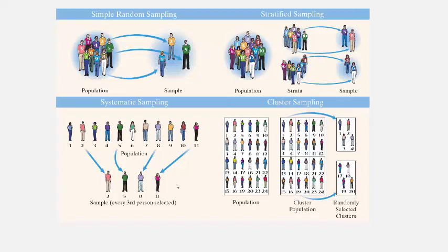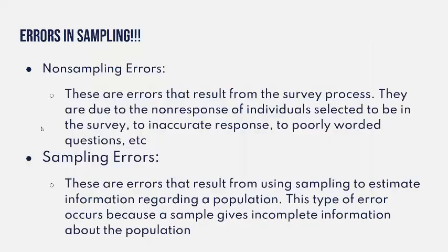Sampling isn't always going to give you the most accurate results, because the goal of sampling is to have your sample estimate the population. Sometimes there can be errors in sampling. There are two types: non-sampling errors and sampling errors. Non-sampling errors are errors that result from the survey process — they're due to non-responses of individuals selected for the survey, inaccurate responses, poorly worded questions, etc. You try to control for these as much as you can.